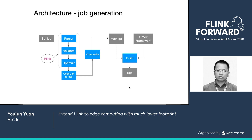The optimization module outputs the optimized logical plan. Here we re-implemented the code generation module, which generates GoLang instead of Java, as user functions for each operator. Hence, we get a list of stream transformations with user function GoLang code. The composite module then composes the stream transformations into a concrete GoLang Flink program, connecting each operator, initializing and starting operators in the correct order, setting up the checkpoint coordinator, etc. The output is the main Go source file, which is then built against the Quick framework for the specified OS and CPU architecture. Finally, we get the job executable.